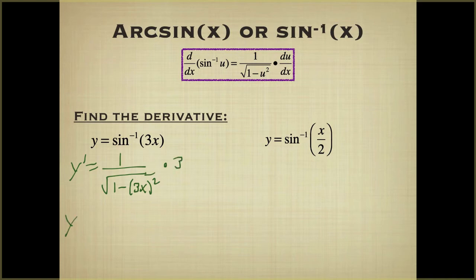We are going to make this a little bit simpler. We're going to have 3 over the square root of 1 minus 9x squared. I am not going to make you rationalize this denominator. You can leave it just like this. So 3 over the square root of 1 minus 9x squared.